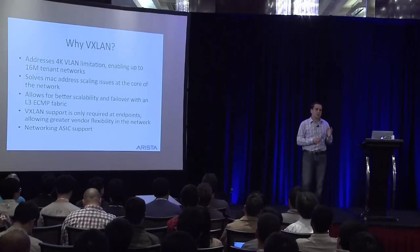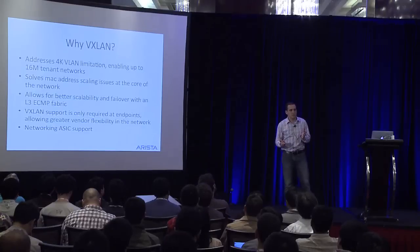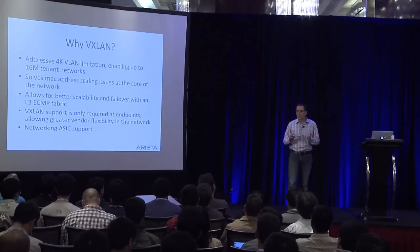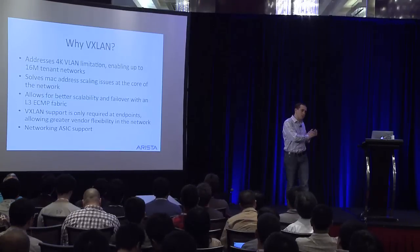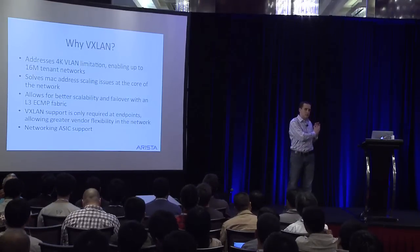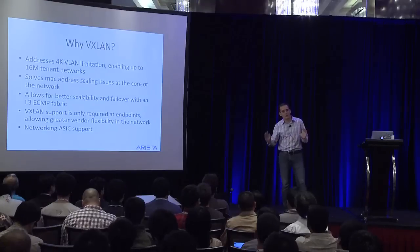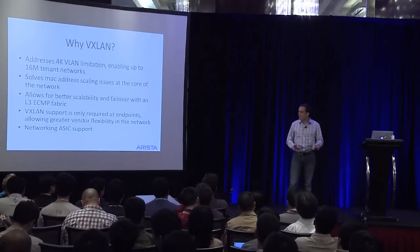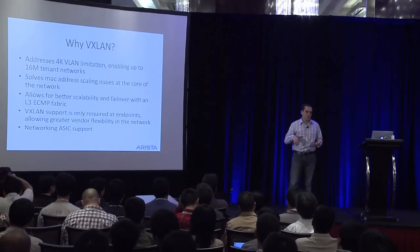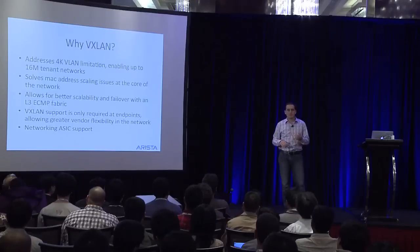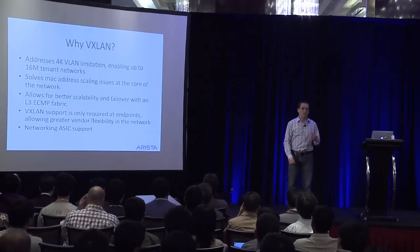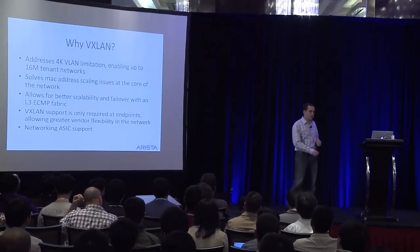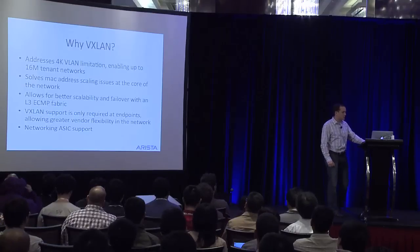One important aspect of VXLAN compared to other network virtualization solutions: you only need support at the edge of your network. This isn't a rip-and-replace — you don't need to put VXLAN support throughout your entire network; you can use equipment you've already bought and just need VXLAN support at the edge. The second key point is that VXLAN can actually be supported in network ASICs, and we'll get to why that's important.